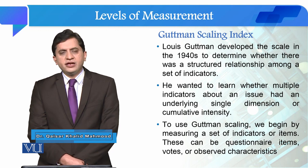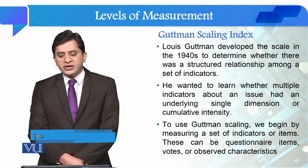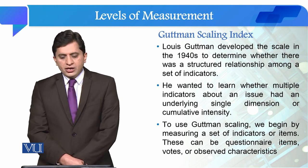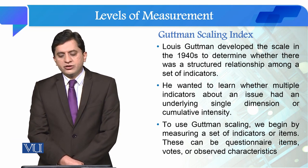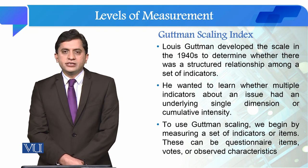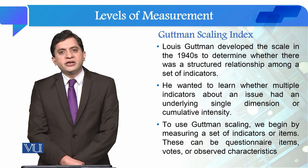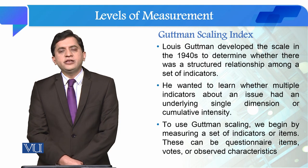Goodman Scaling Index was developed by Lewis Goodman in the 1940s to determine whether there was a structured relationship among a set of indicators. When we develop this scale, we assume that our indicators are hierarchically interrelated with each other.